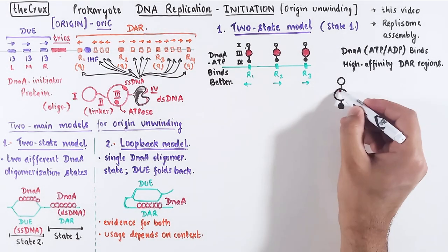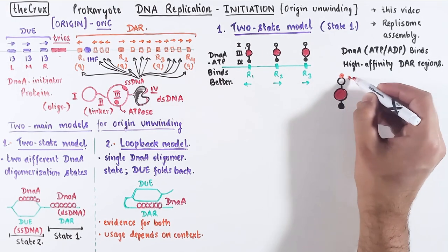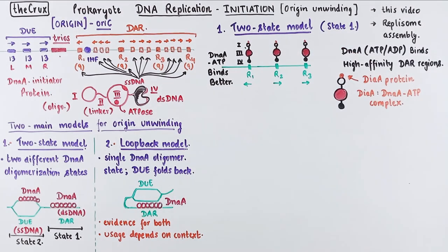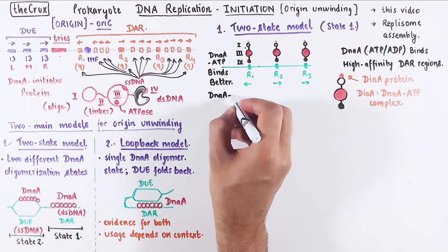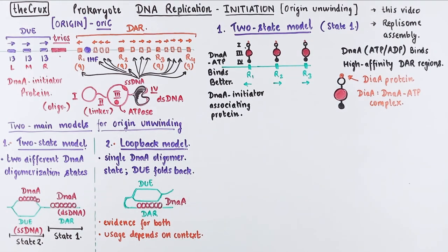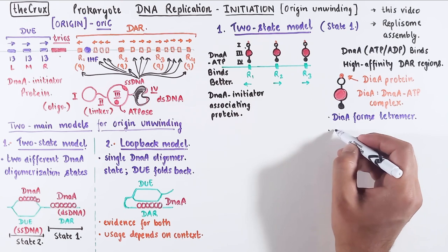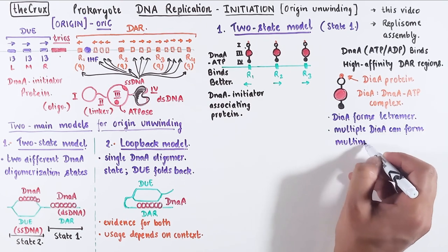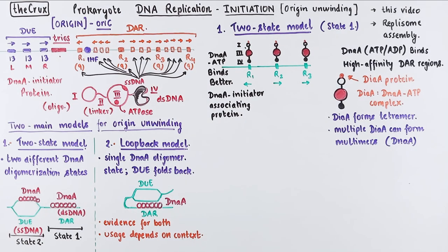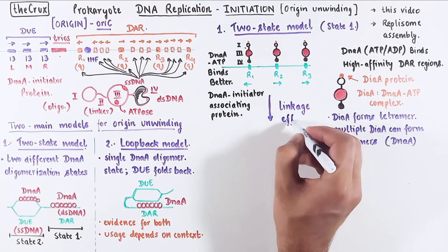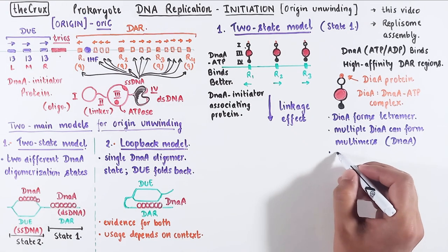DnaA protein actually comes with a helper protein, which is called DiaA. It can either come in a DnaA-DiaA pre-complex, or it can bind to the DnaA after it is bound at the DAR. The order of events in this case is not that big of a deal. By the way, DiaA stands for DnaA-initiator-associated protein. Now, why do we care about DiaA? Well, it turns out that DiaA can form tetramers. And if DiaA can form multimers or tetramers, then it can also form DnaA multimers, since DiaA is bound to the domain of DnaA. This sort of association is called the linkage effect of DiaA, and this drives the DnaA oligomerization.